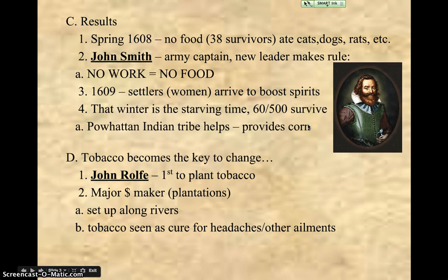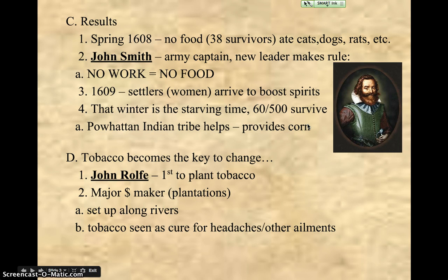The king sends women and other boats with more people to boost the spirits of the colony. That winter when these new settlers show up in 1609, 500 total settlers are in Jamestown, but only 60 survive the winter — and it's called the Starving Time. Again, they choose to eat anything they can to survive.